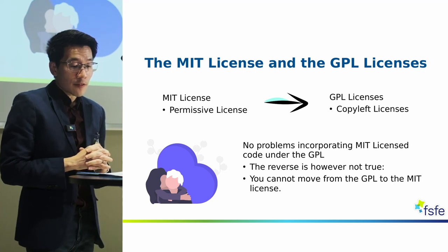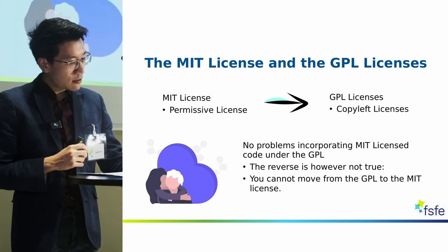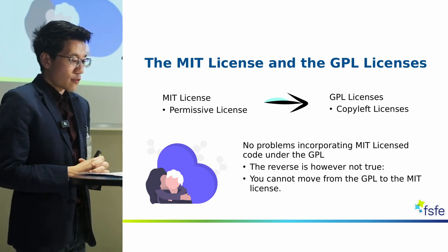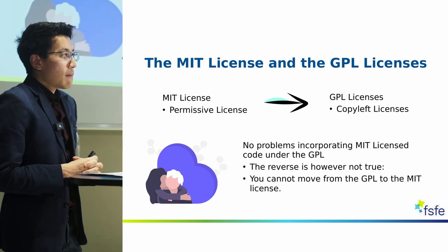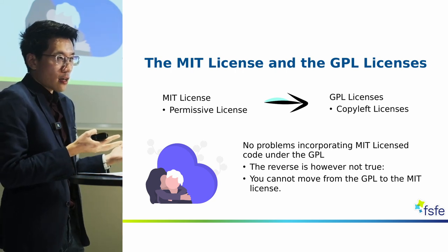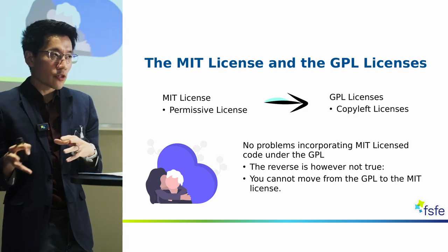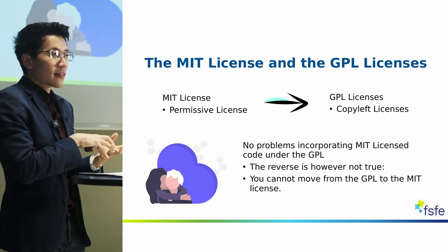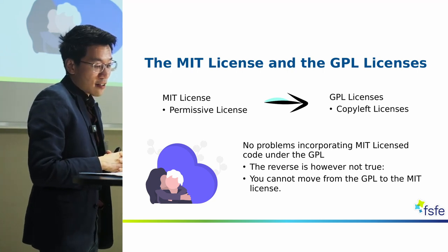Let's look at a few examples of compatible free software licenses. A good starting point is two very popular licenses: the MIT and the GPL. The MIT license is one of the most permissive free software licenses out there — under its terms, you can pretty much do anything with the code. One problem with that is that you can turn derivative works into proprietary software. When you say you can do anything with the software, you also have to accept that derivative works can be turned into proprietary software — that's an unfortunate side effect of non-reciprocal licenses.